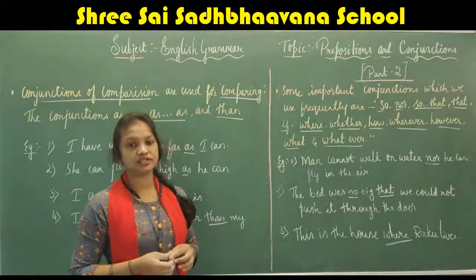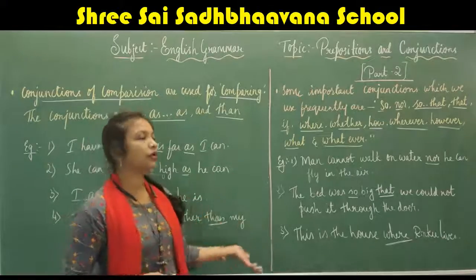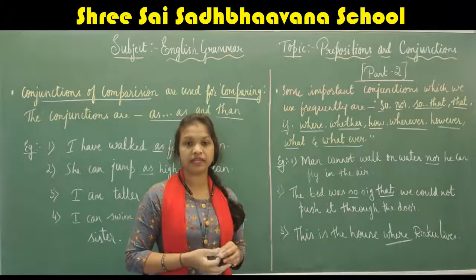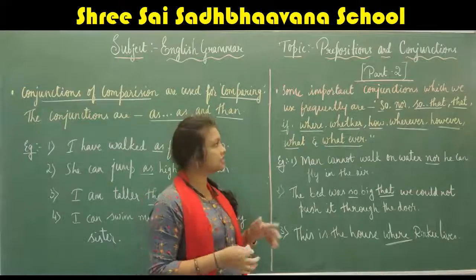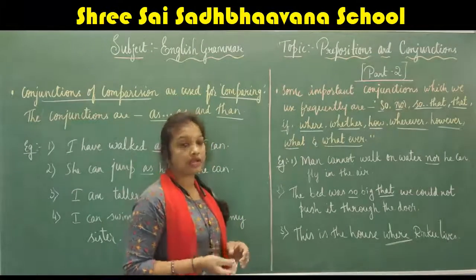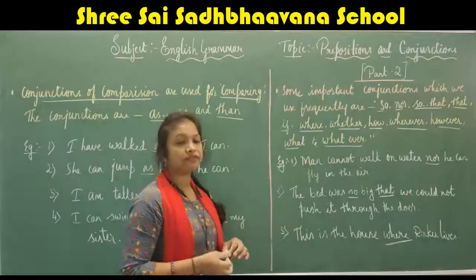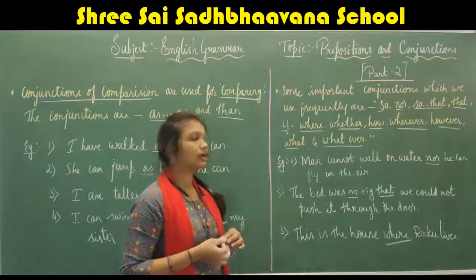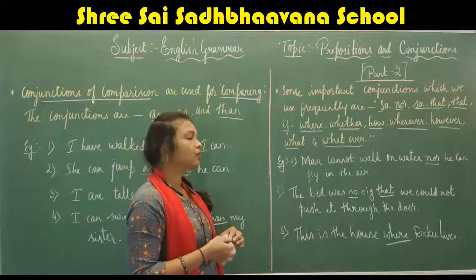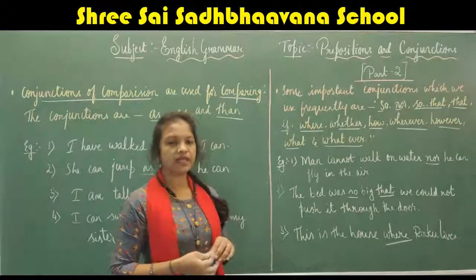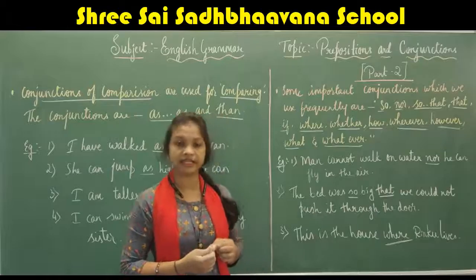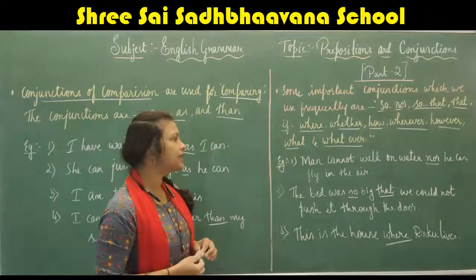There are also some important conjunctions we use frequently in daily life: 'so', 'nor', 'so that', 'that', 'if', 'where', 'whether', 'how', 'wherever', 'however', 'what', and 'whatever'.